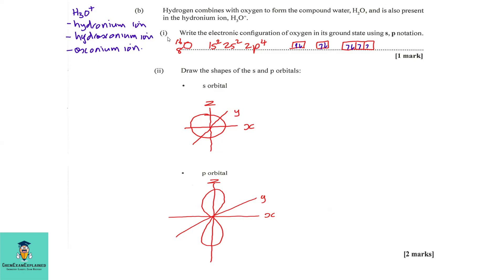Part B1: Write the electronic configuration of oxygen in its ground state using sp notation. So, we go 1s² 2s² 2p⁴, since the atomic number of oxygen is 8. So, we accounted for 8 electrons.